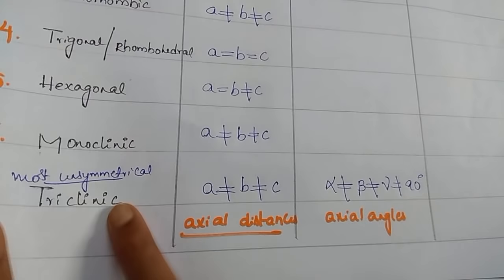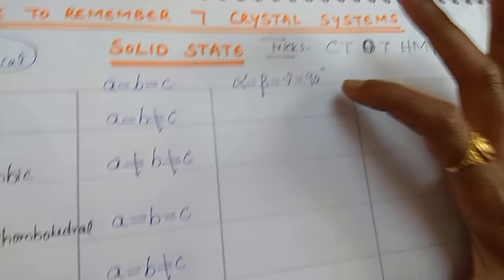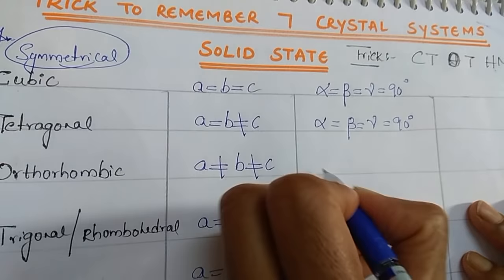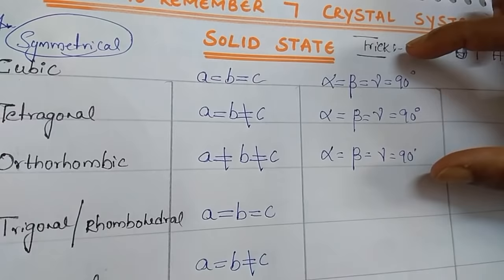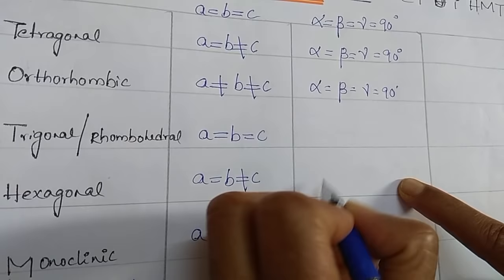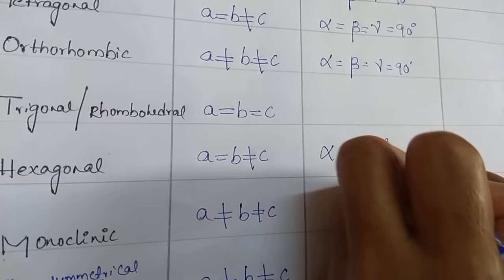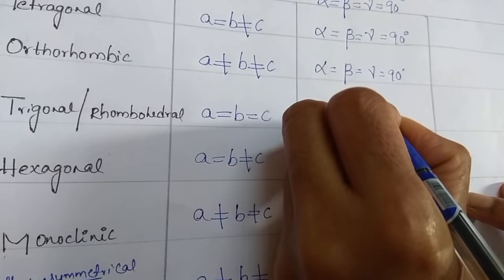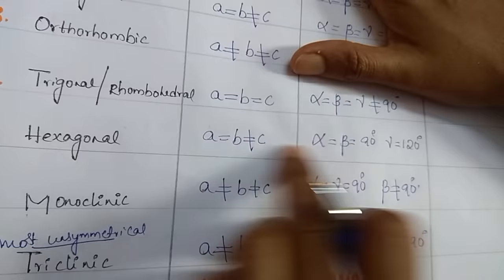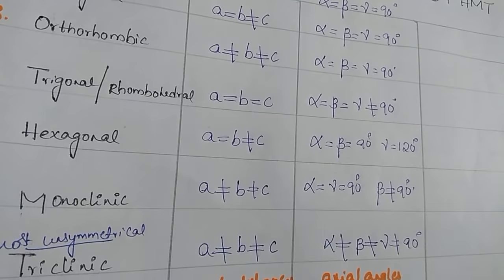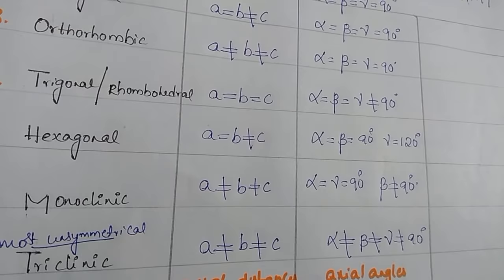In case of tetragonal: alpha=beta=gamma=90°, same as cubic. For hexagonal: alpha=beta=90° whereas gamma=120°. After hexagonal, write the monoclinic and triclinic entries to avoid confusion. These angle values are frequently asked in objective examinations like NEET, JEE, and SET.